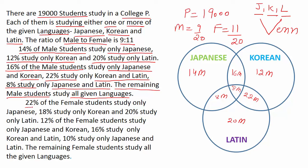Next point: 22% of female students study only Japanese, so we write 22F in only Japanese. F is for female. 18% study only Korean, so we write 18F in only Korean. And 20% study only Latin, so we write 20F in only Latin.